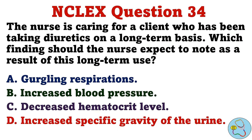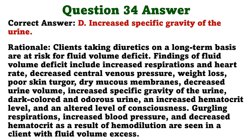The nurse is caring for a client who has been taking diuretics on a long-term basis. Which findings should the nurse expect to note as a result of this long-term use? A. Gurgling respirations. B. Increased blood pressure. C. Decreased hematocrit level. D. Increased specific gravity of the urine. The correct answer is D: increased specific gravity of the urine. Clients taking diuretics on a long-term basis are at risk for fluid volume deficit. Findings of fluid volume deficit include increased respirations and heart rate, decreased central venous pressure, weight loss, poor skin turgor, dry mucous membranes, decreased urine volume, increased specific gravity of the urine, dark-colored and odorous urine, an increased hematocrit level, and an altered level of consciousness. Gurgling respirations, increased blood pressure, and decreased hematocrit as a result of hemodilution are seen in a client with fluid volume excess.